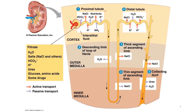The capsule is not permeable to blood cells or large molecules such as plasma proteins. Thus, the filtrate produced in the capsule contains salts, glucose, amino acids, vitamins, nitrogenous waste, and other small solutes. In this session, we will follow filtrate along its pathway in the nephrons and collecting ducts.